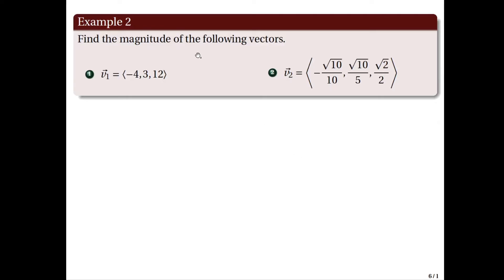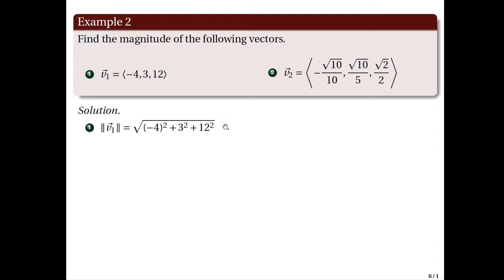So now let's look at some examples. Given these vectors, let us find their magnitude. First, consider the vector v1 with components negative 4, 3, 12. The norm of v1 will be the square root of the sum of the squares of its components. So we have the square root of negative 4 squared plus 3 squared plus 12 squared, or the square root of 16 plus 9 plus 144, which is equal to the square root of 169, or 13. Therefore, this vector v1 has length 13.